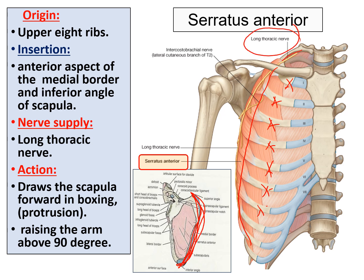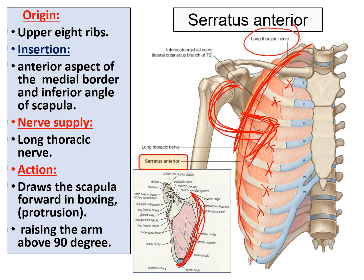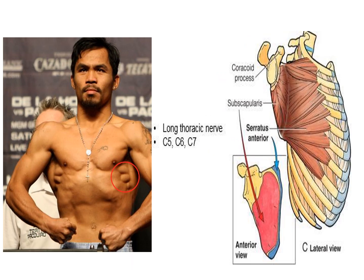The nerve supply of serratus anterior is the long thoracic nerve. Its action is that when you try to push a wall or box, this muscle draws the scapula forward to bring about the desired pushing and punching action. It also helps when raising the arm above the head, as in combing. You can see the serratus anterior inserted into the anterior surface of the medial border of the scapula.